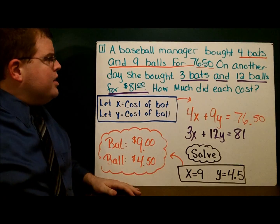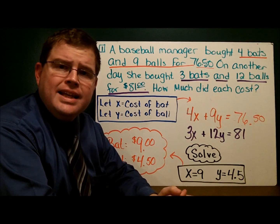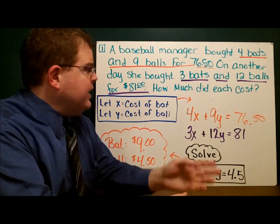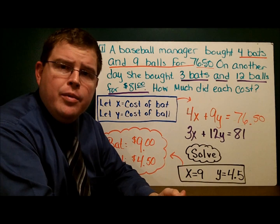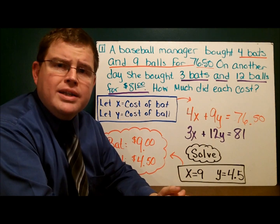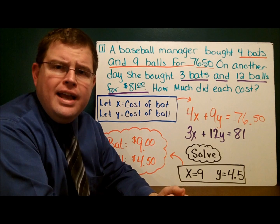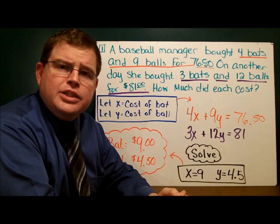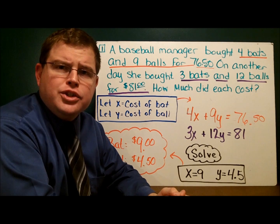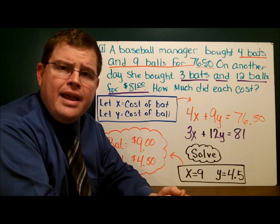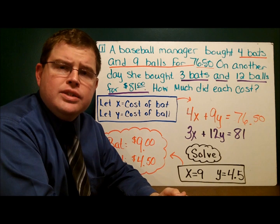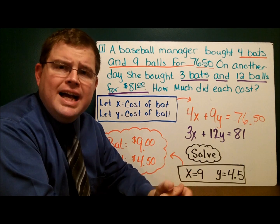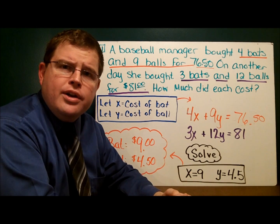In our first example, we have a baseball manager. The baseball manager bought four bats and nine balls for $76.50. Similarly, she also bought three bats and twelve balls for $81. The question is: what is the cost of a bat and what is the cost of a ball? It seems to be a situation where she can't find the receipt, but she found the cancelled check that came back from the bank. She decided to use a system of equations in order to figure that out.